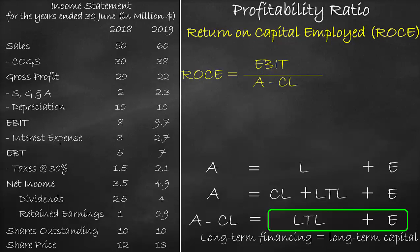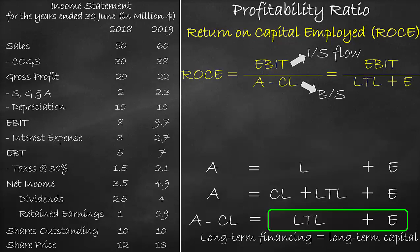We can rewrite ROCE as EBIT divided by long-term liabilities plus equity. We can get the EBIT from the income statement, while we get the assets and current liabilities from the balance sheet. Please note that the income statement is a flow account, which means it is calculated over a year, while the balance sheet is a stock account, which is calculated at a certain period of time.